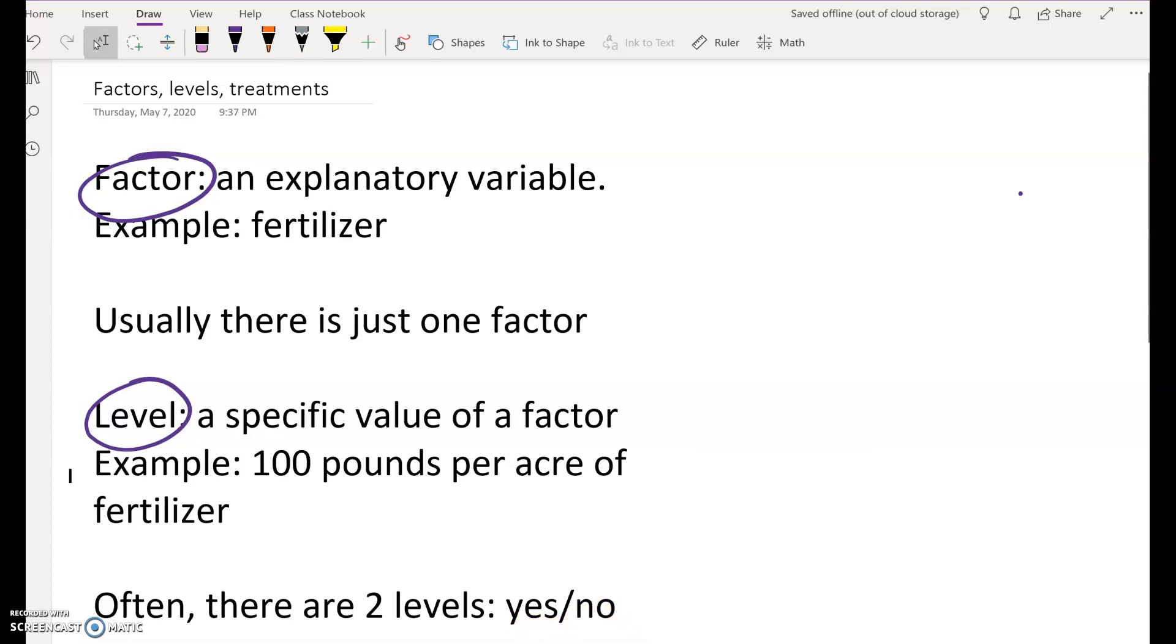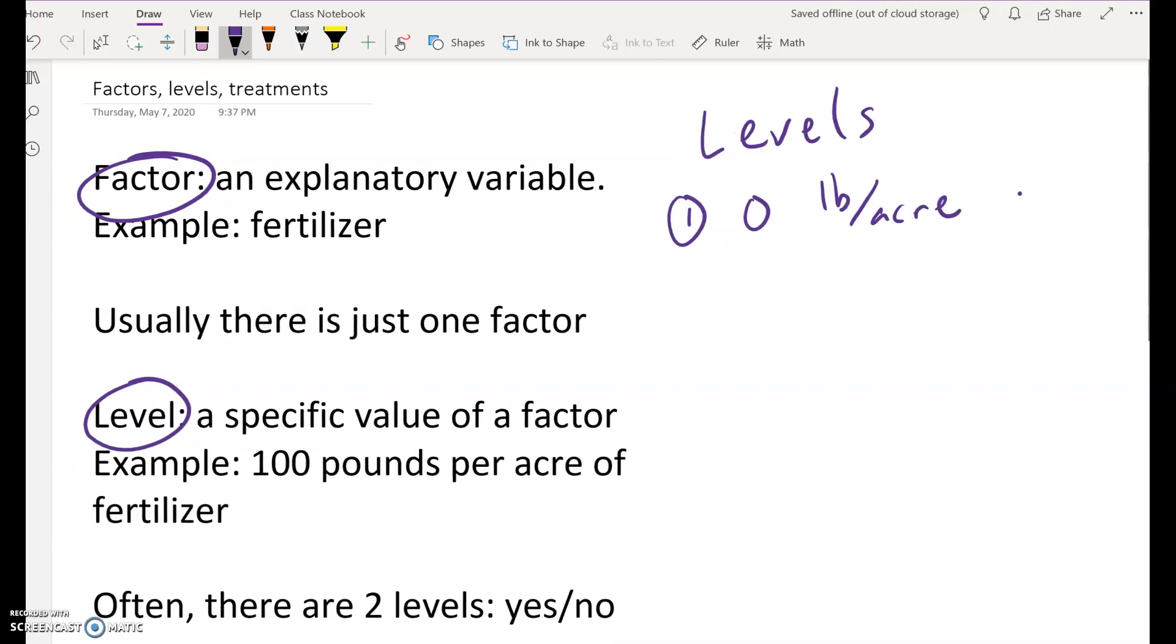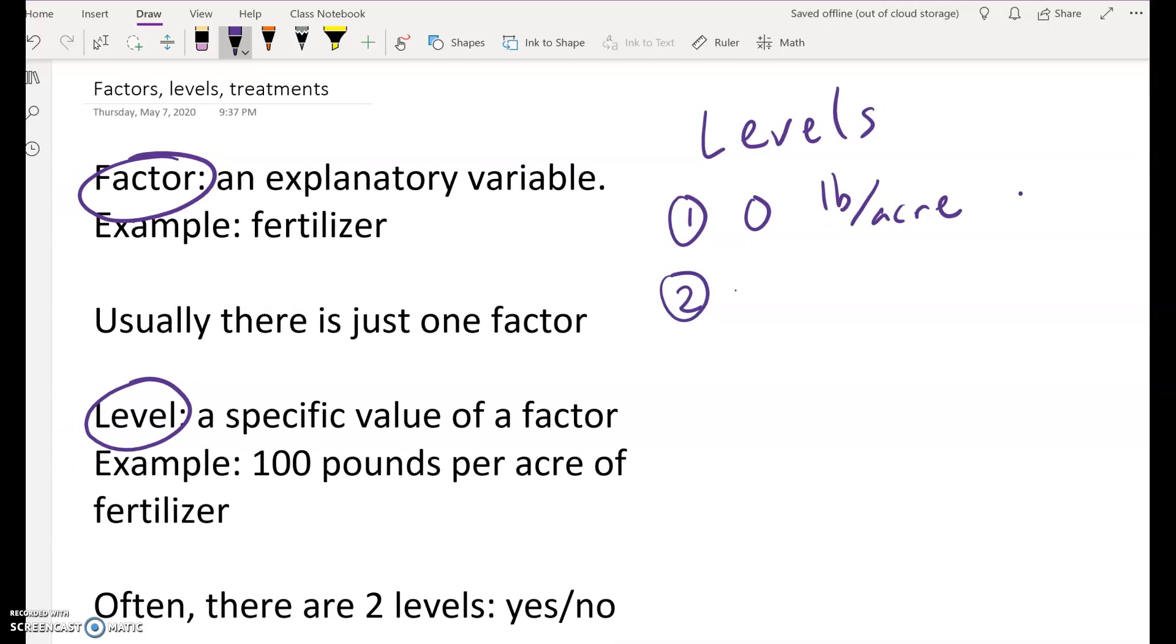But you can have several levels. For example, you can set up an experiment where you have, say, level one is you get zero pounds per acre of fertilizer. And then level two is you get 20 pounds per acre of the fertilizer. And level three is you get 40 pounds per acre because you're not sure what's the best amount. So you want to try different amounts.